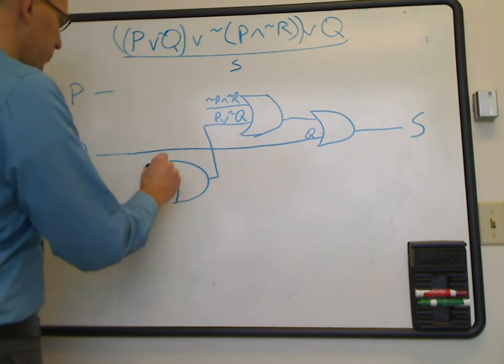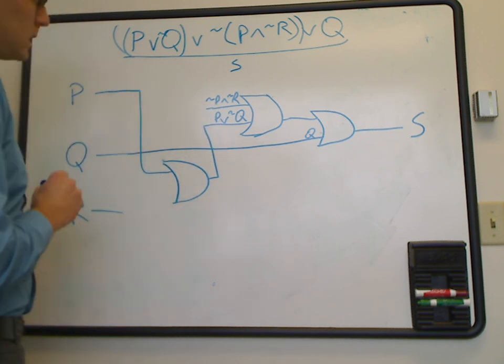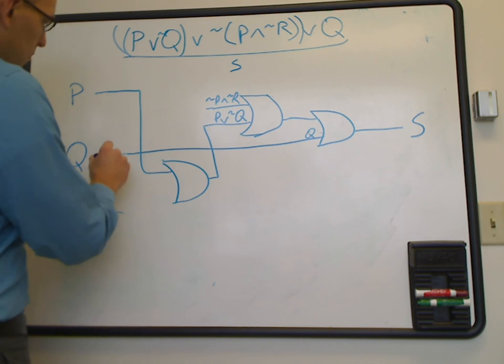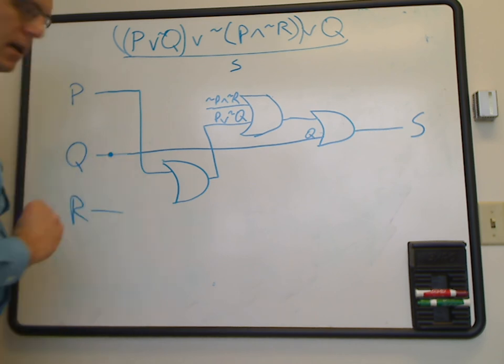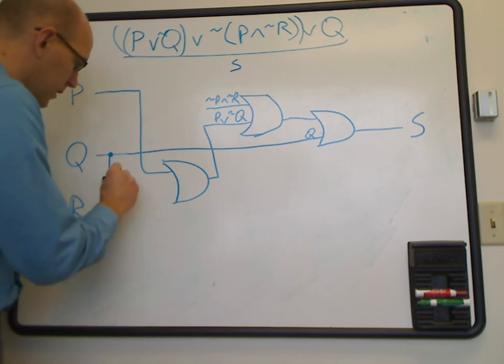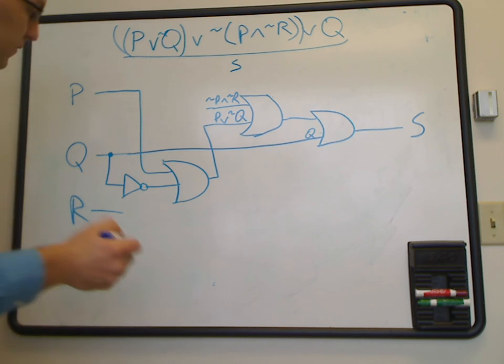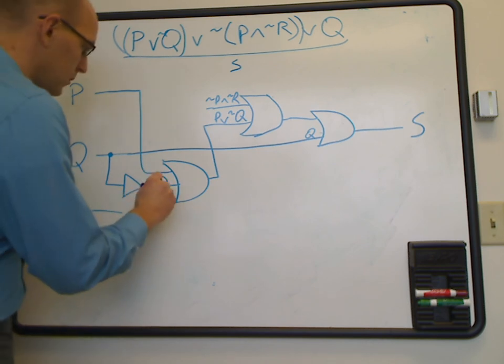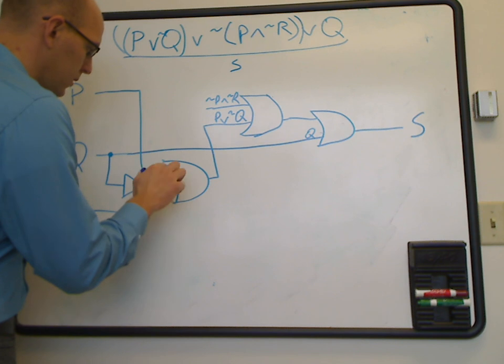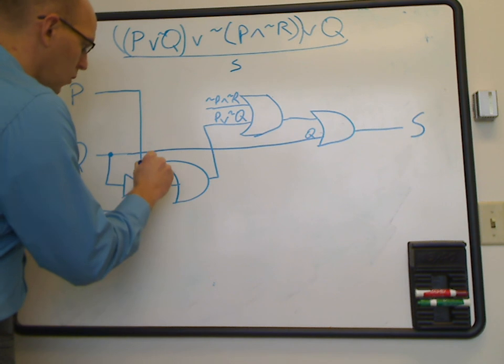And to get that, we have to get a p. So I'll go up here and grab a p. And then we have to have a NOT q. So to get that, I'm going to make a junction with the q. I'm going to do that by adding a little dot here. And then I come over here, I put a NOT on it, and I connect that up to our OR. So now we've got NOT q and OR p.